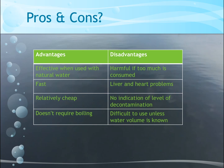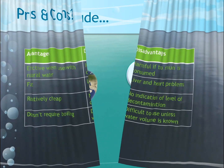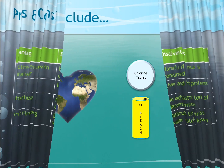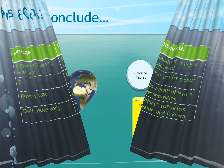Too much chlorine can cause problems with the liver and heart, whereas not enough chlorine can leave the water insufficiently decontaminated. This means the volume of water being decontaminated needs to be known before it is treated chemically.